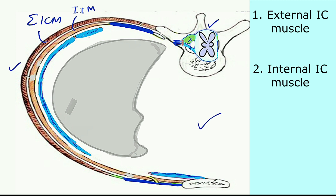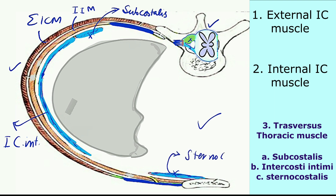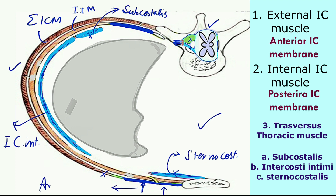Then comes the transversus thoracis muscle, which has three parts: at the posterior aspect, the subcostalis muscle; in the middle of the intercostal space, the intercostalis intimi; and at the front, the sternocostalis muscle. These three are the parts of the third layer — the transversus thoracis muscle. The external intercostal muscle is deficient anteriorly — this gap is filled by the anterior intercostal membrane — and the internal intercostal muscle is deficient posteriorly — that gap is filled by the posterior intercostal membrane.